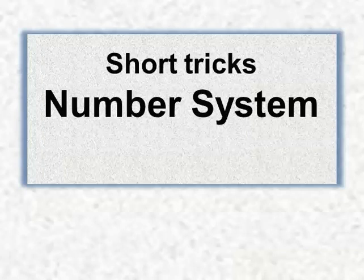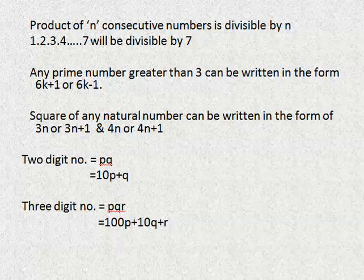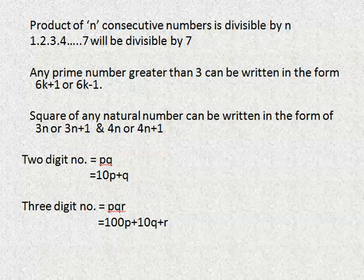Short tricks on number system: the product of n consecutive numbers is always divisible by n. For example, we have the numbers 1, 2, 3, 4 up to 7. Here n equals 7, therefore the product of the sequence